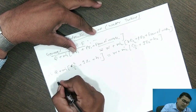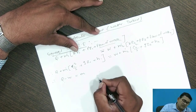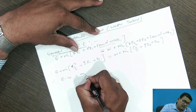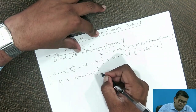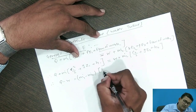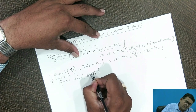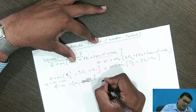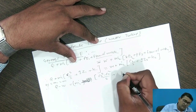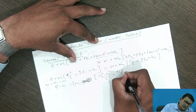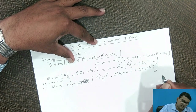Rearranging these values: Q minus W equals mass — since m1 equals m2, write as mass m — times bracket: change in kinetic energy (C2 squared minus C1 squared) over 2, plus potential energy g(z2 minus z1), plus (H2 minus H1). This is the general equation.